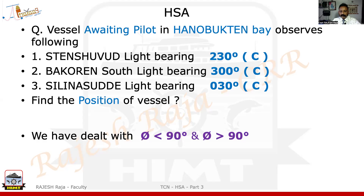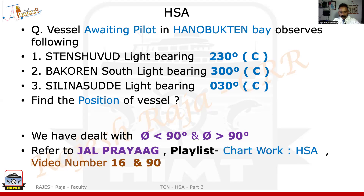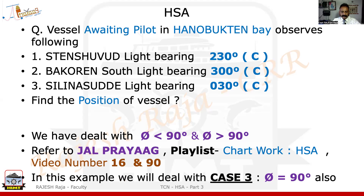Quick recap: we have already dealt with the angle less than 90 and the angle more than 90. Those are the two videos you need to look at if you are coming for the first time — video number 16 and 90 of Jal Prayag. Please go to the playlist and search for HSA or horizontal angle. This time I am dealing with case number 3, theta equal to 90. There are totally five cases, and in the next video I will finish case number 4 and 5 together as they are simpler.